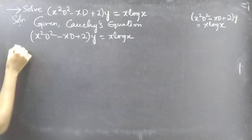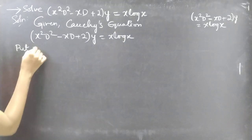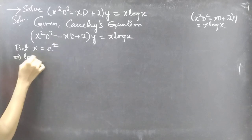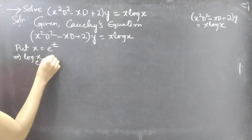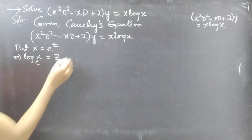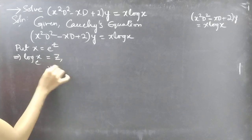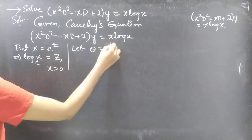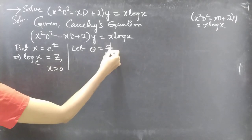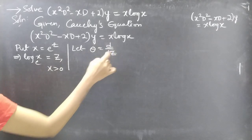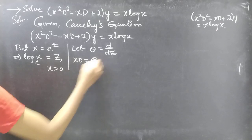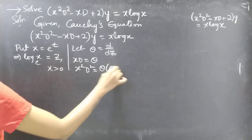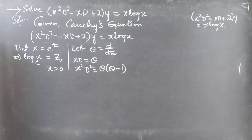Now let's make the substitution. Put x equals to e to the z. Then log x to base e equals z. Let theta equal to d by dz — theta is a differential operator with independent variable z. Then x D equals theta, and x squared D squared equals theta times theta minus 1.